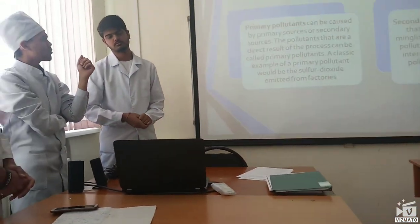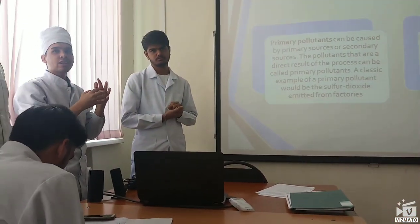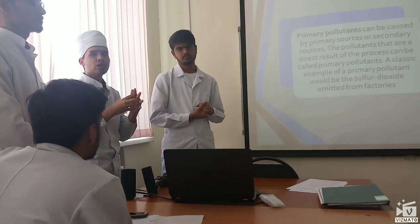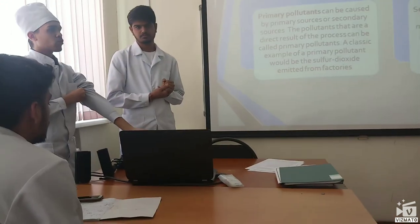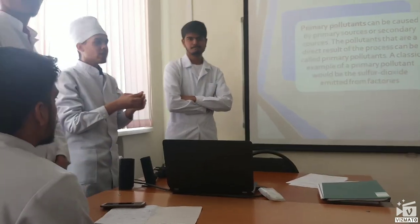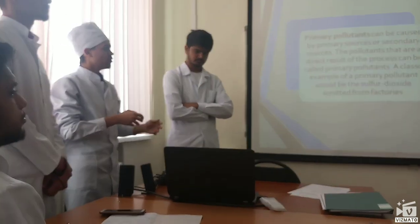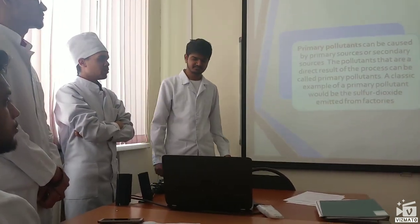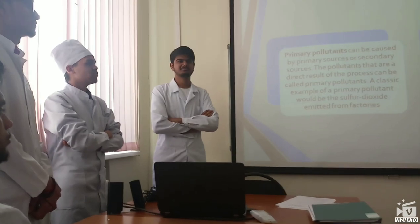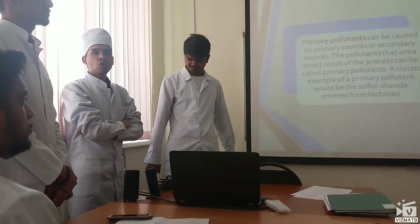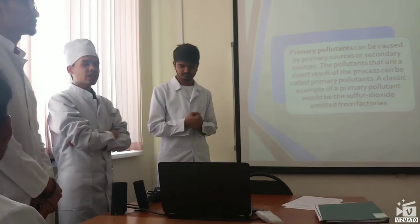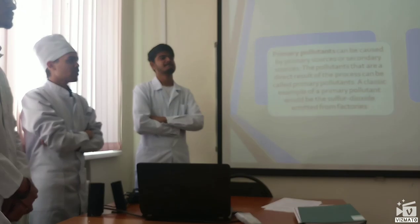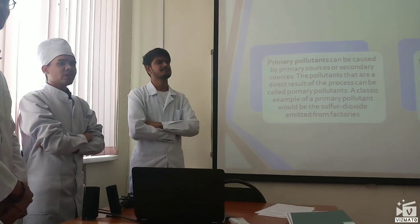Types of pollutants: primary pollutants and secondary pollutants, caused by primary sources and secondary sources. Primary pollutants are the direct result of the process. A classic example of primary pollutants would be sulphur dioxide, nitrogen oxide and carbon monoxide, which are emitted from factories. Secondary pollutants are caused by the intermingling and reaction of primary pollutants. Smoke created by the interaction of several primary pollutants is known as secondary pollutants.